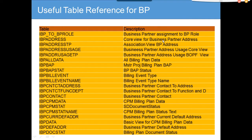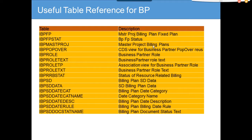One key table is IBP address — the core view of business partner address. IBP2 is the business partner role table, also pretty important. For vendor master and customer master, there is the IBP role table, which is very useful. There are also tables for plan date description and billing, which are useful for the customer side.